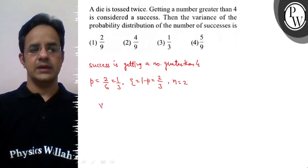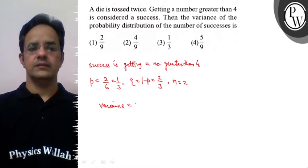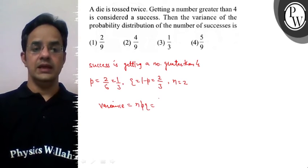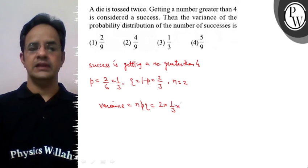Now variance is given by n multiplied with p multiplied with q. Now n is 2, the probability of success is 1 by 3, and that of failure is 2 by 3. So the value comes out to be 4 by 9.